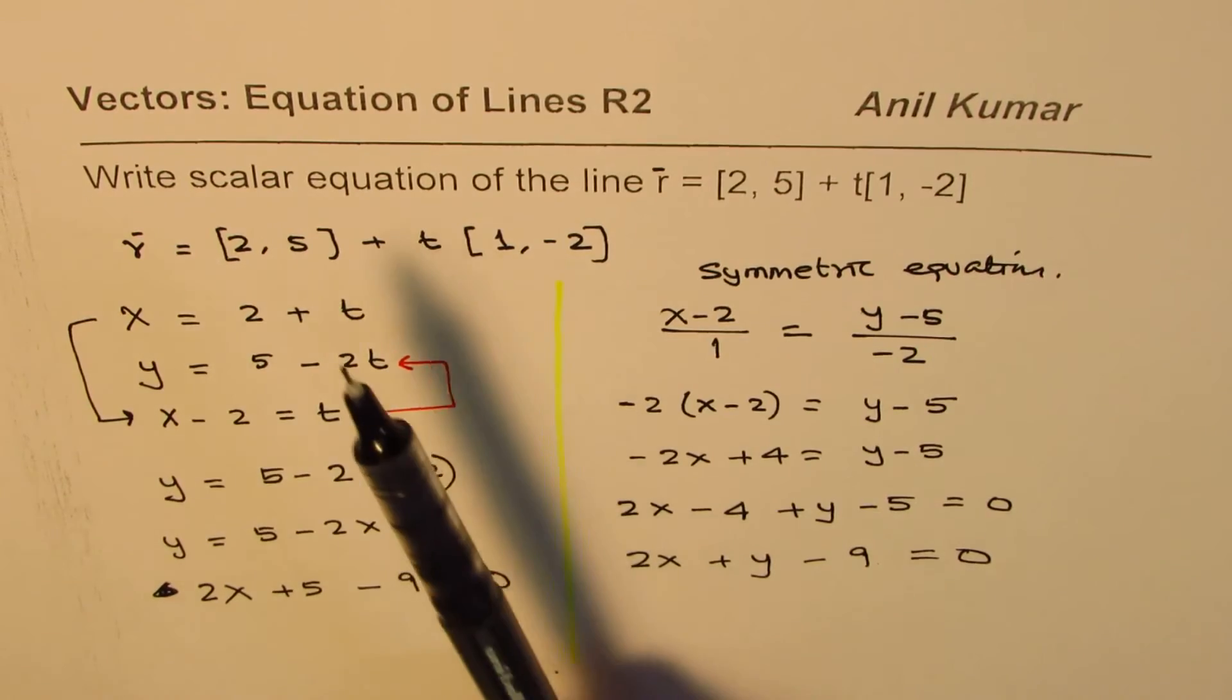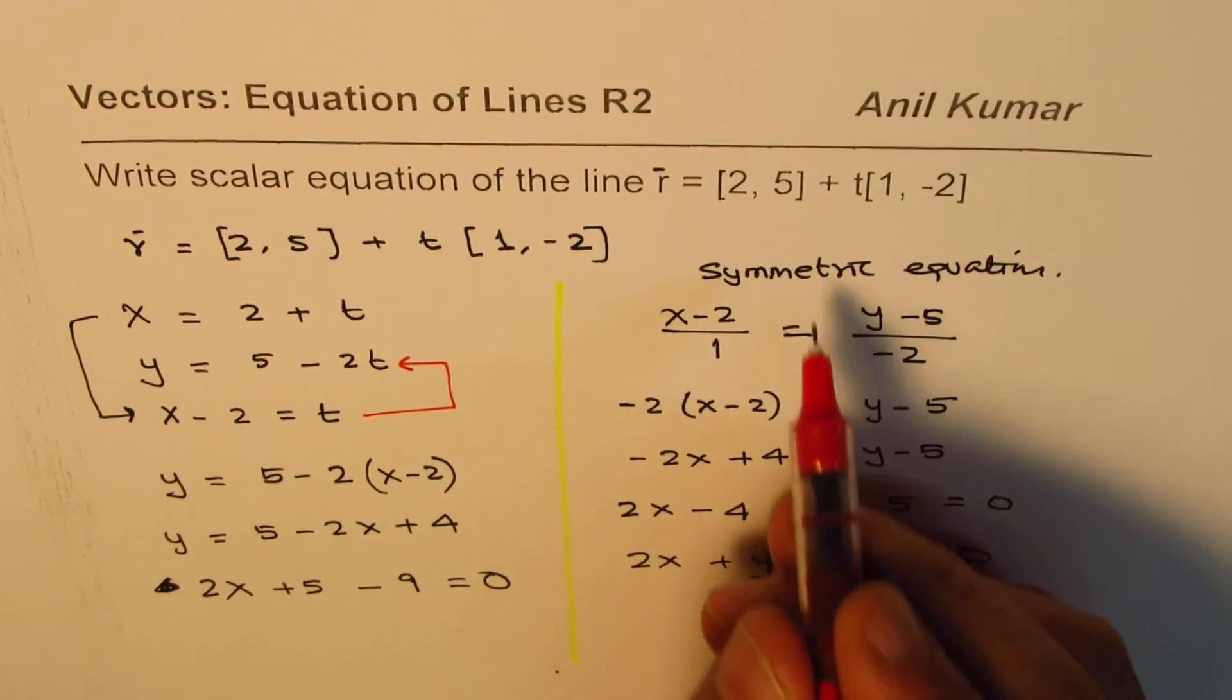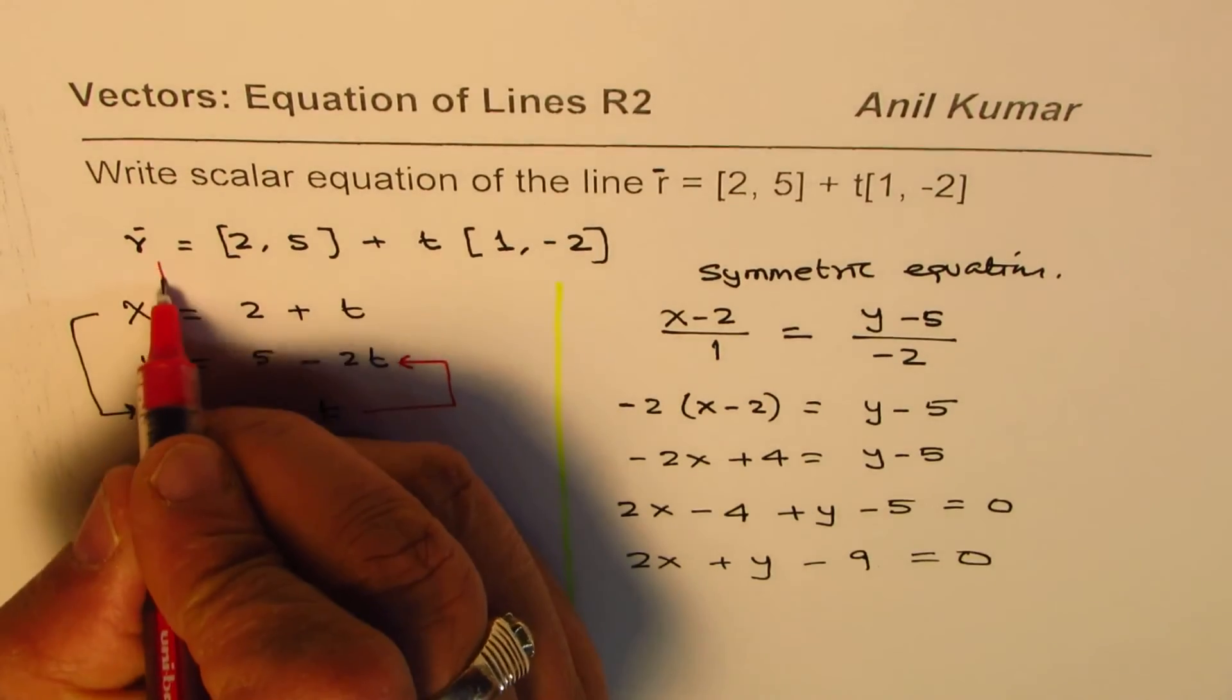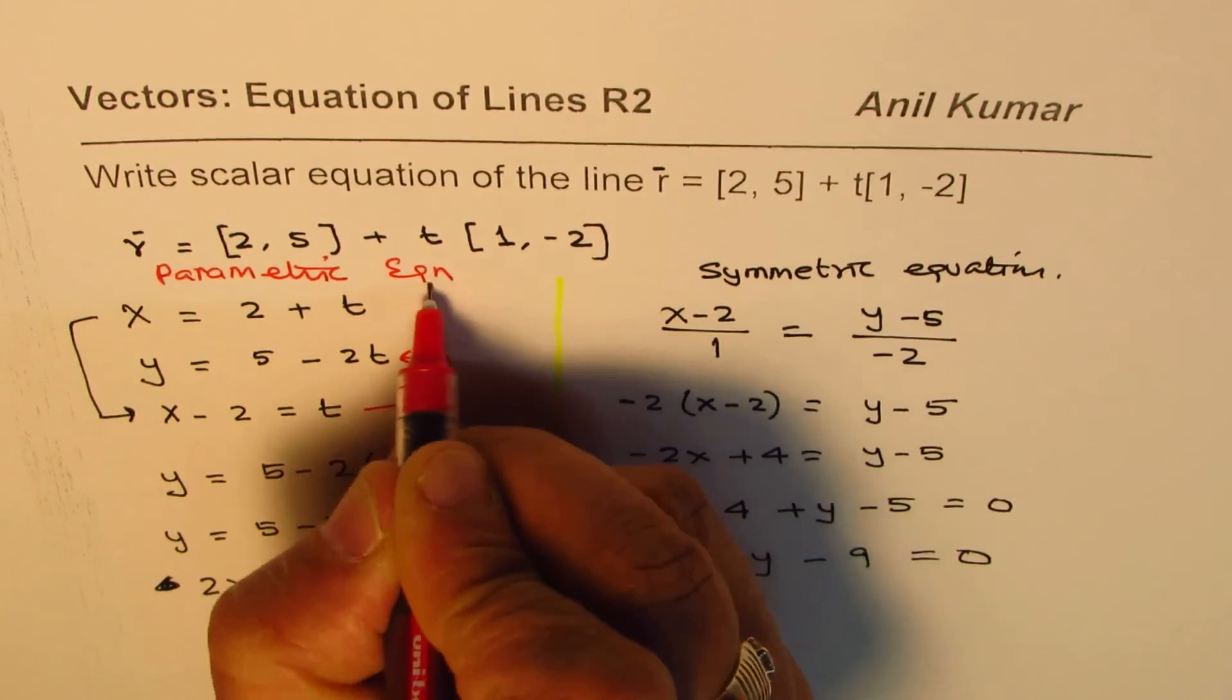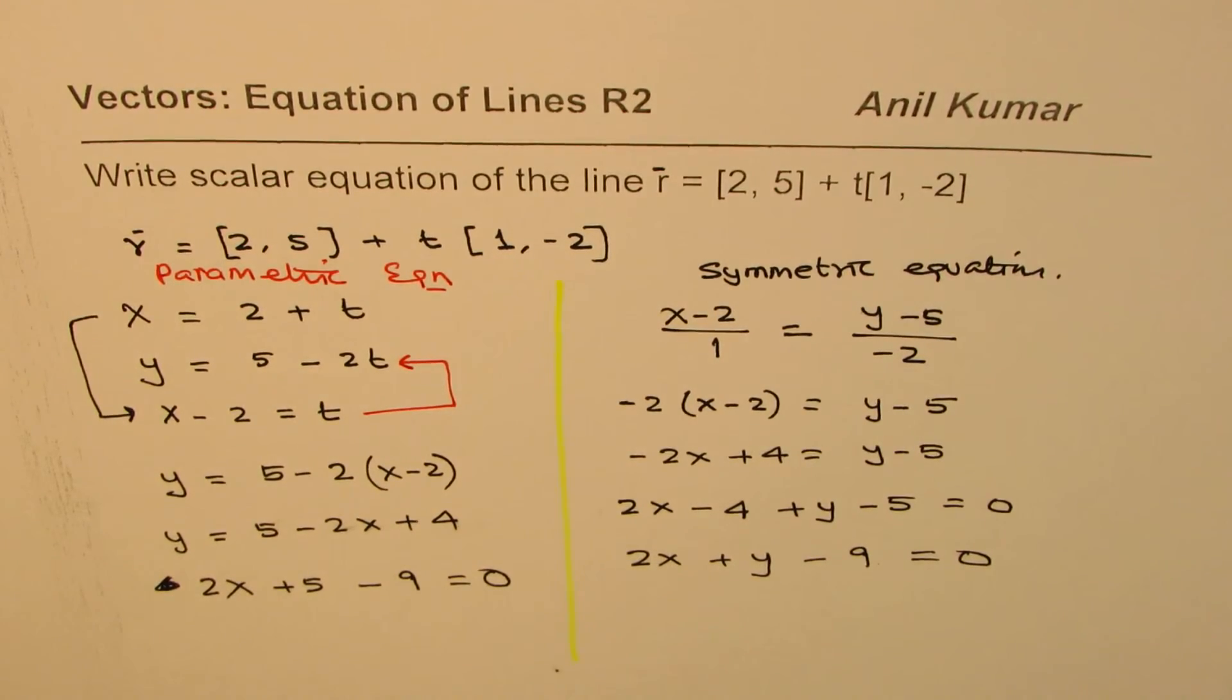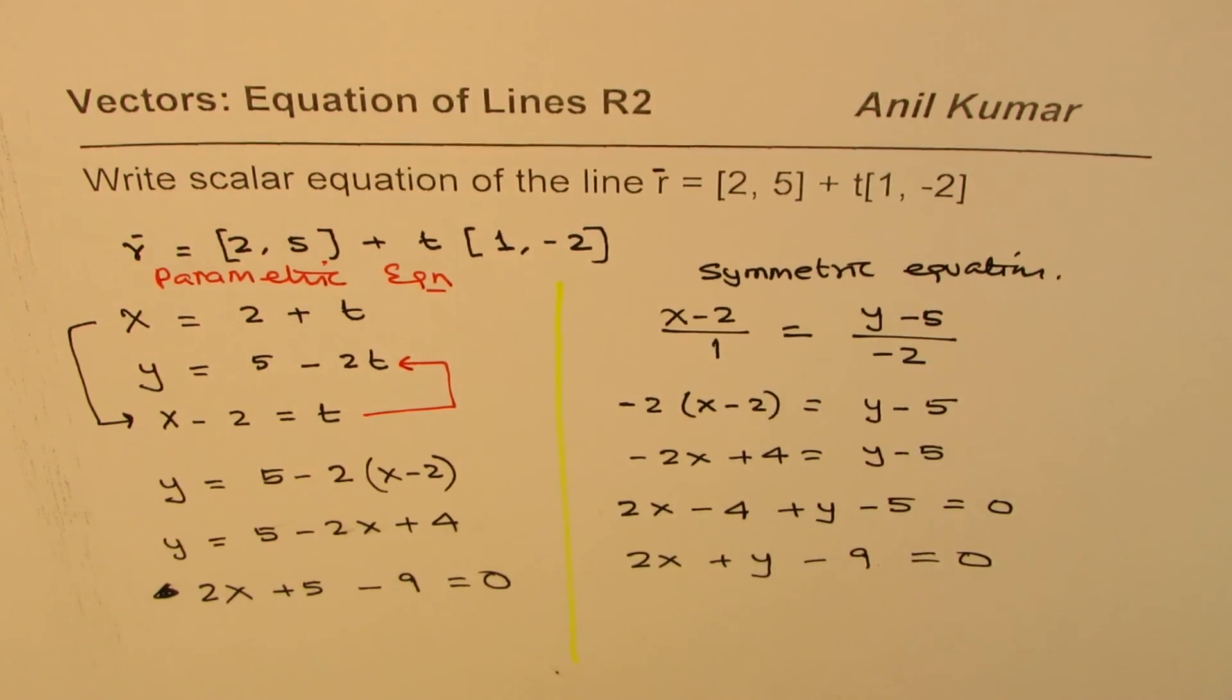From the vector equation you could get to a parametric equation or to a symmetric equation, and then you can write down this scalar equation. A step like this will be involved. Adopt the method which you like most. I am Anil Kumar and I hope that helps. You can always share and subscribe my videos. Thank you and all the best.